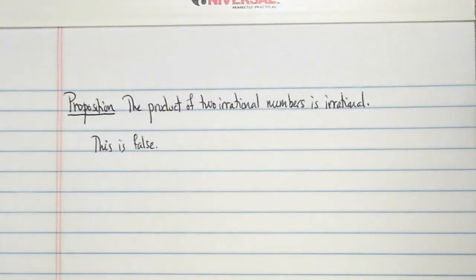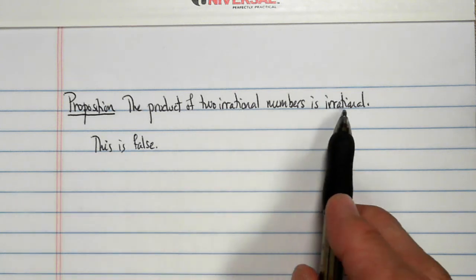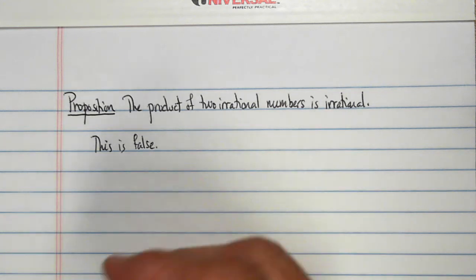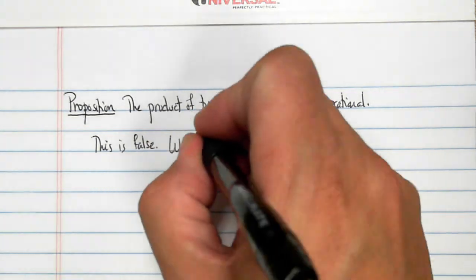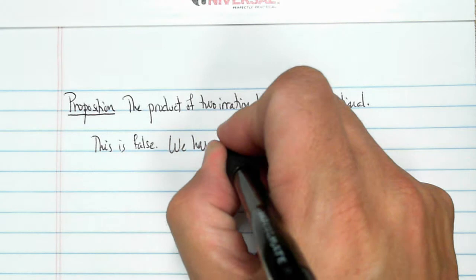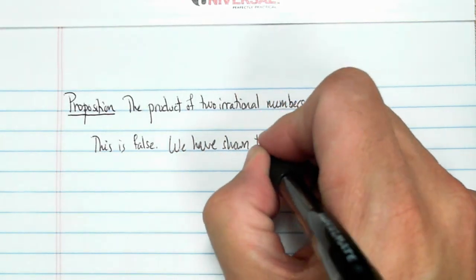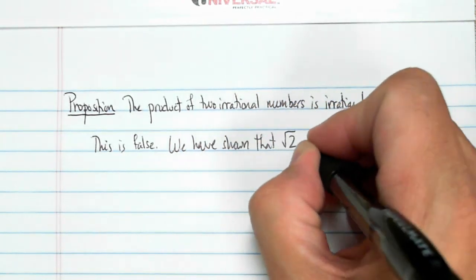So I'm not going to prove this. This is actually a false statement. It is possible to have two irrational numbers and multiply them and come up with a rational number, not an irrational number. We have shown that the square root of two is irrational.